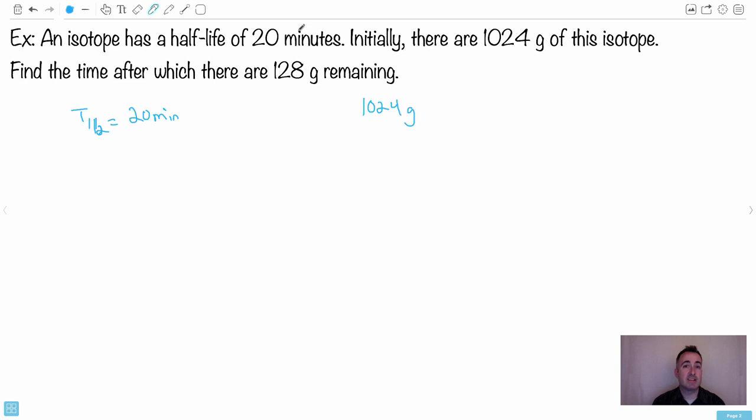Maybe what we can do is consider just look at half-life and look what happens. So what if, for example, we take this 1024 and we try to maybe split it into two. So this is originally, right? So this is original. And maybe then what we can do, we can actually sort of consider how much is there actually remaining. So watch this.